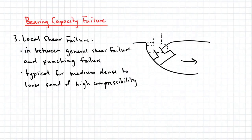Finally, we have local shear failure, which can be considered as being between general shear failure and punching failure. This is typical for medium-dense to loose sand of high compressibility potential.